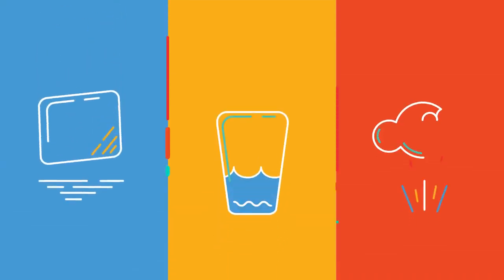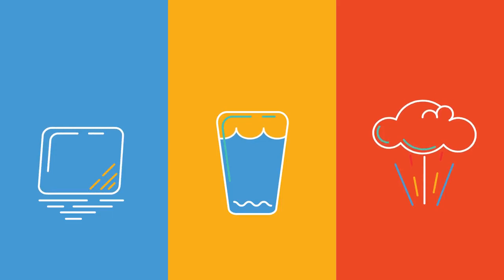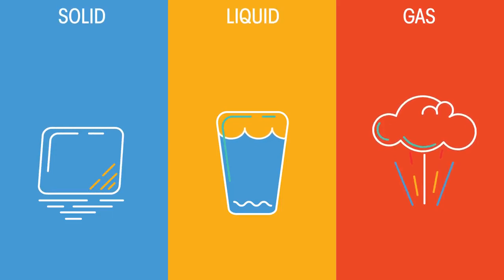On Earth, materials exist in one of three main states of matter – solid, liquid or gas. Materials can change between these states.